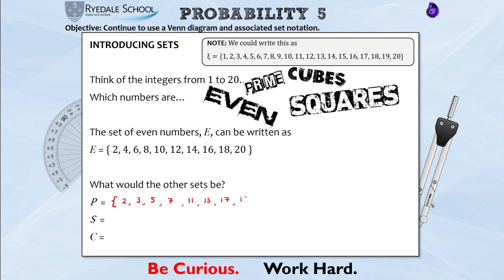S for the square numbers. Which numbers between 1 and 20 are square? Well we've got 1 times 1 which is 1, 2 times 2 which is 4, 3 times 3 which is 9, 4 times 4 which is 16, and 5 times 5 is too big so let's close that set off.